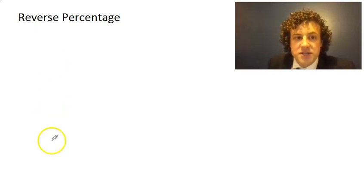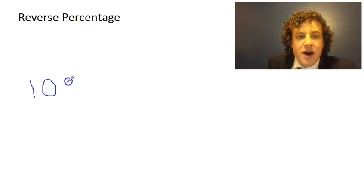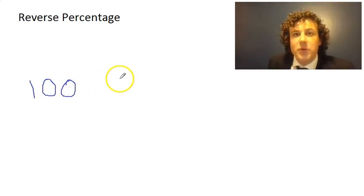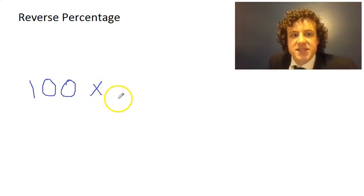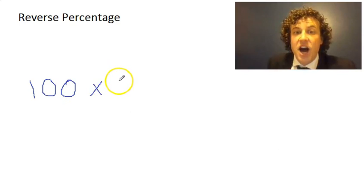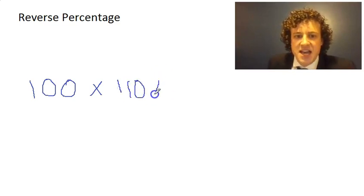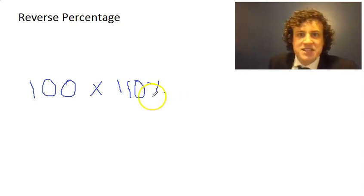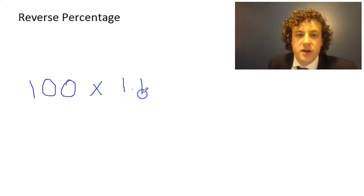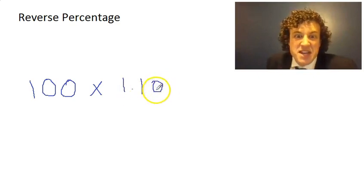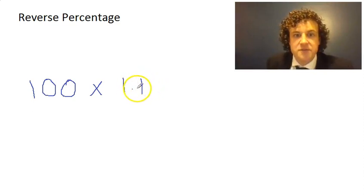Let's see the right way to do it. Starting with 100 again, we're going to use multipliers. If we increase by 10%, we end up with 110% - because we start with 100% and add 10% more. On your calculator you could type 110 and press the percent button, which just divides by 100. So really we multiply by 1.1, because that's what 110% is as a decimal.